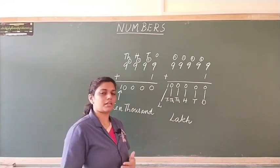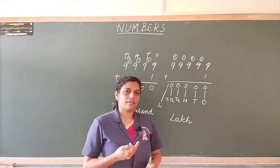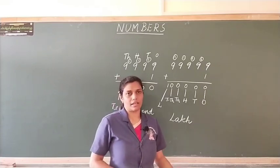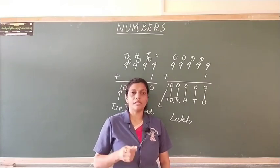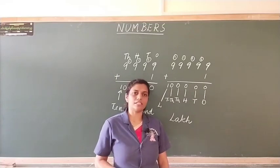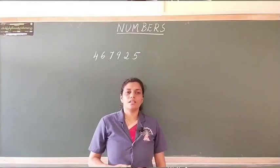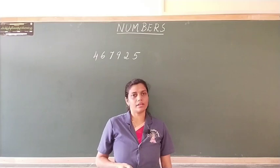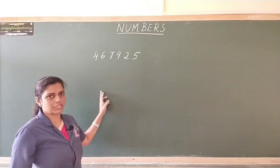Again, when you continue counting from here, we reach 9,99,999 and that becomes the largest 6-digit number. I repeat, the largest 6-digit number will be 9,99,999. Now, children, let us take a 6-digit number example. So, here we have a number with 6 digits.